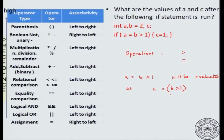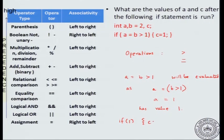Now b is 2, so b greater than 1 is 1. So you have a equal to 1 — the assignment expression assigns the value 1 to a and returns the value 1. Then this whole if expression becomes if (1), so c equal to 1 — that statement will be executed.